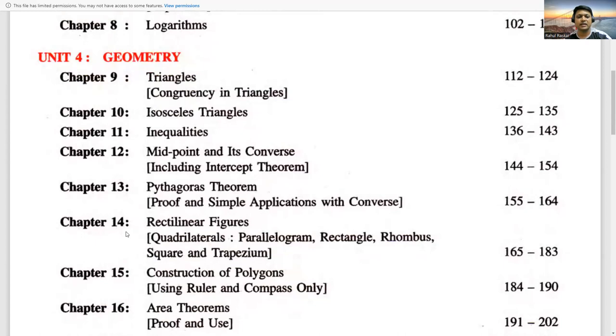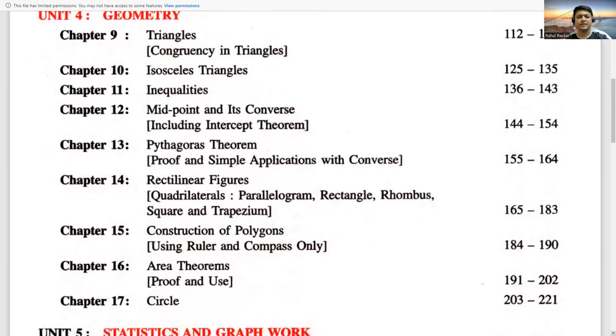Then chapter 14th has rectilinear figures which has different quadrilaterals like parallelogram, rectangle, rhombus, square and trapezium. Then 15th chapter has construction of polygons. Here we use ruler and compass for construction. Then chapter 16th has area theorems, its proof and its uses.